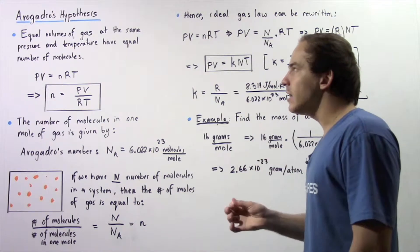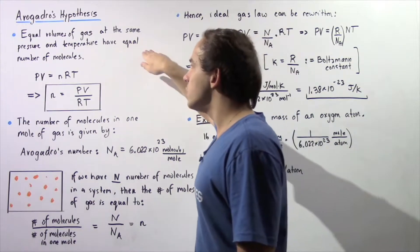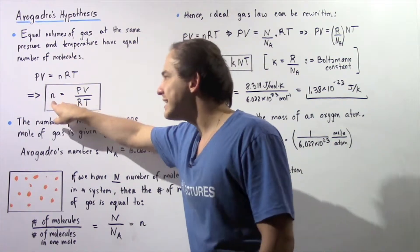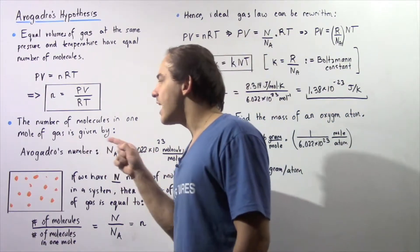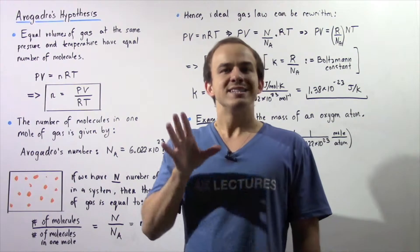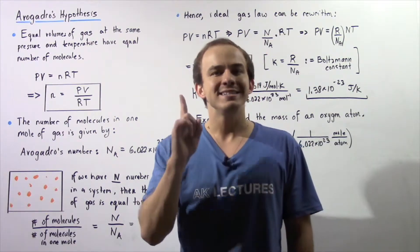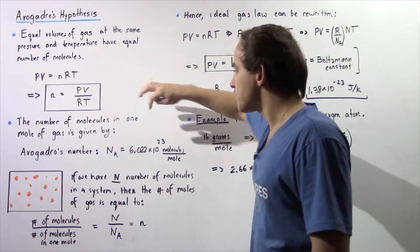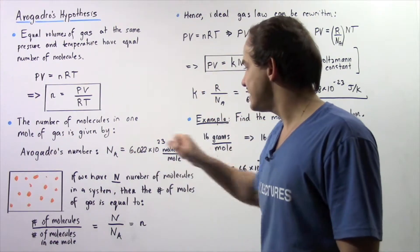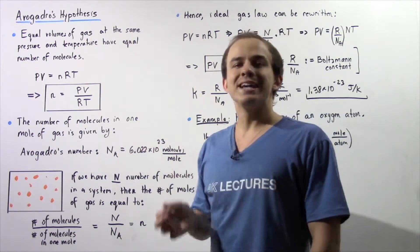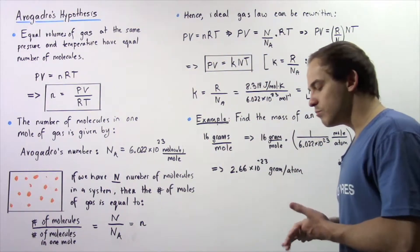So once again, equal volumes of different gases at the same pressure and temperature have equal number of molecules and equal number of moles. There is something called Avogadro's number, and it simply tells us how many molecules or atoms there are in a single mole of gas. N subscript A, which is Avogadro's number, is equal to 6.022 times 10 to the 23 atoms or molecules in every single mole.